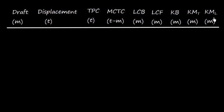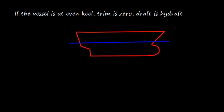All the hydrostatic particulars in a ship stability booklet are tabulated against the hydrostatic draft, and that is the draft at the center of flotation. The center of flotation is the point where the ship trims.